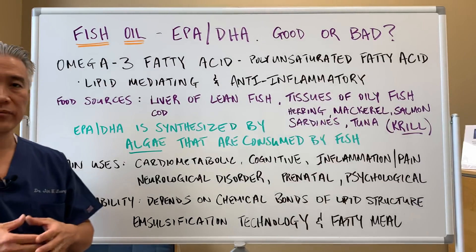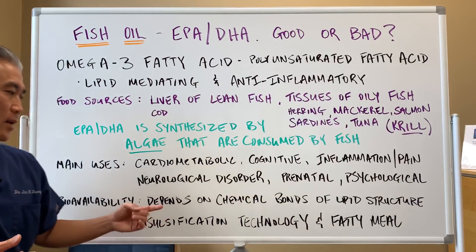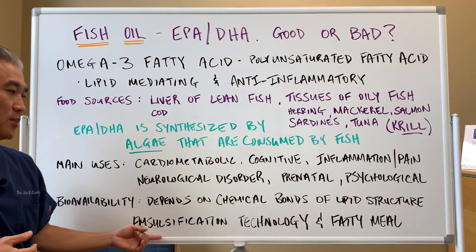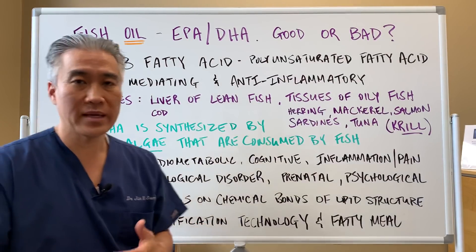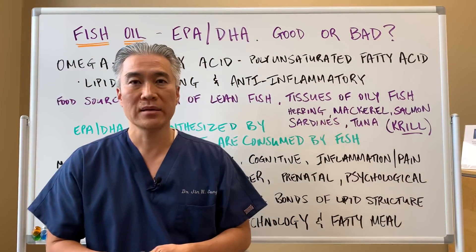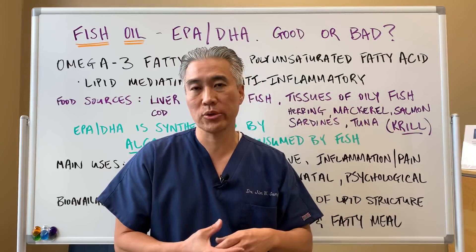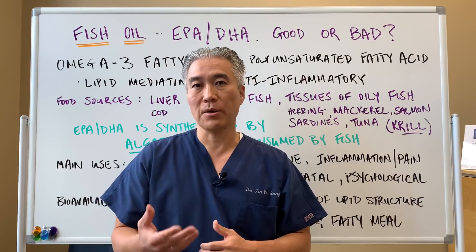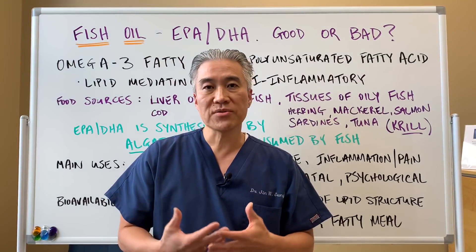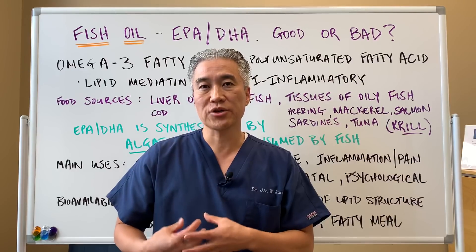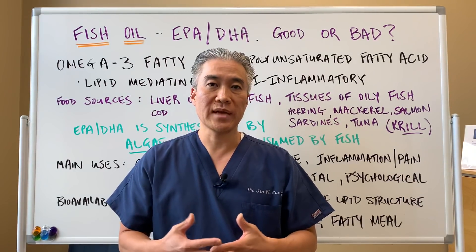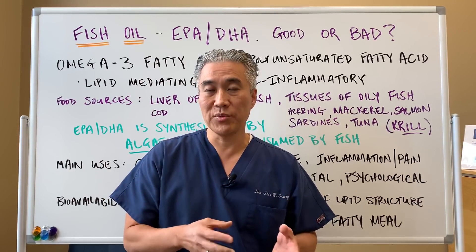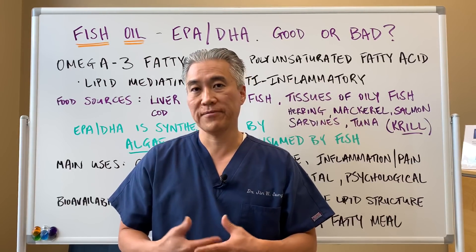Bioavailability is variable and depends on the chemical bonds of the lipid structure — meaning how it's formed — and the emulsification technology used to make it. Also relevant is whether you're eating a fatty meal with it, as absorption can be better when taken alongside fatty food. Gallbladder function matters too, because bile salts emulsify fats. If you've had your gallbladder removed, you're not going to digest fats very well, so it's important to support the gallbladder whether it was removed or is functioning suboptimally.